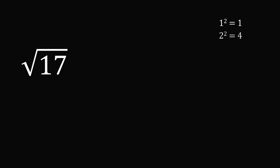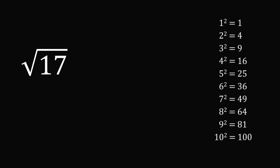We get started by referring to a table of squares of whole numbers — even Babylonians started out with such tables. We want to take the square root of 17, so we look for the square number closest to 17. This will be 16, which is equal to 4 squared. So the square root of 16 is 4, meaning the square root of 17 must be a little bit larger than 4. That'll be our starting point: the square root of 17 is approximately equal to 4.